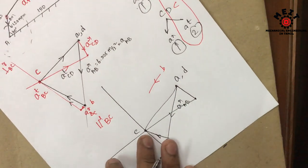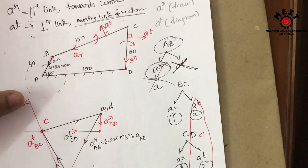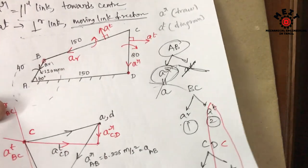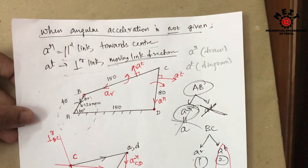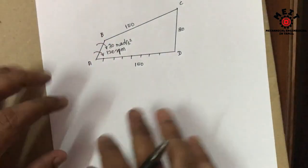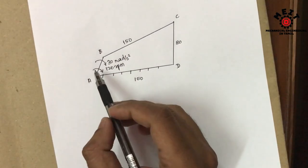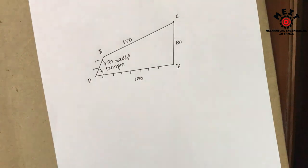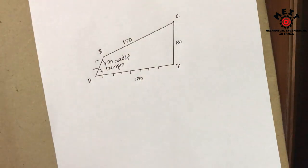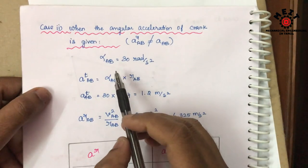So this is the acceleration diagram for the case when angular acceleration is not given. Now, if we know the angular acceleration, we will see how to do it. The input link has an angular acceleration value — 30 radian per second squared. So in this case we will see how to handle this.